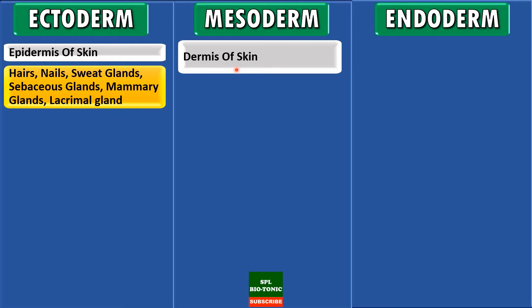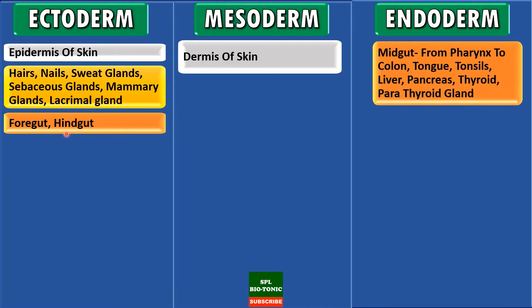Students, we know that the digestive system is broadly divided into three parts: foregut, midgut and hindgut. In this case, the foregut and hindgut arise from ectoderm. Whereas the midgut, which starts from the pharynx till the colon, originates from endoderm.